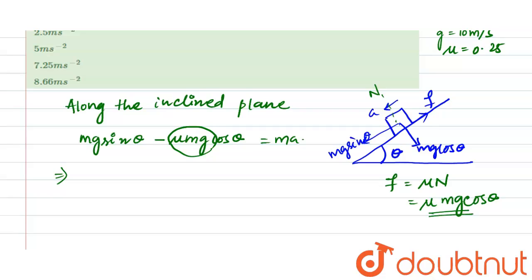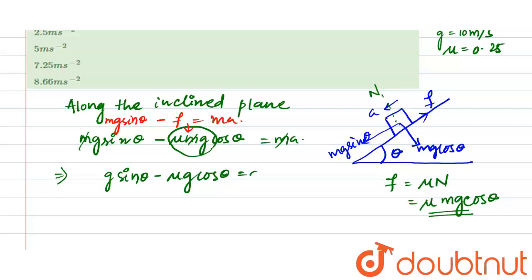So, mg sin theta minus mu mg cos theta is equal to ma. The equation is mg sin theta minus f equals ma. Substituting f, we get mg sin theta minus mu mg cos theta equals ma. From this we can calculate acceleration — mass m cancels out on both sides. Finally, g sin theta minus mu g cos theta is equal to a, which gives a equals g into (sin theta minus mu cos theta).